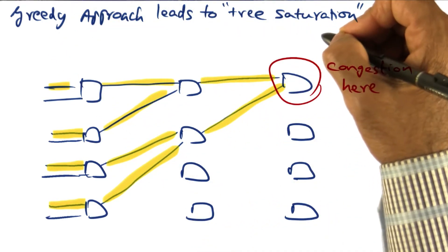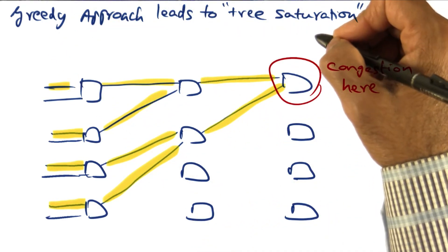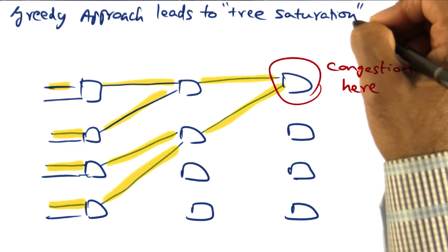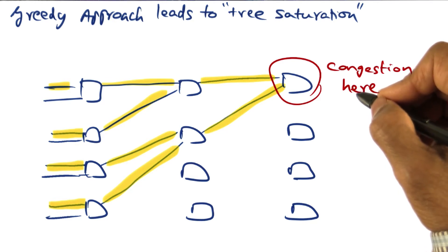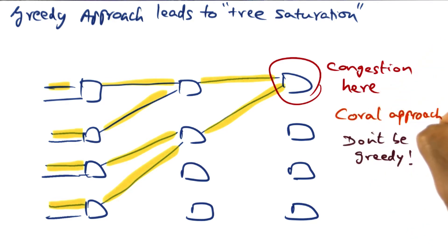We mentioned that the greedy approach of constructing a DHT leads to tree saturation. And the congestion happens at the node which happens to map to a lot of clustered keys. The chordal approach is very simple: don't be greedy.